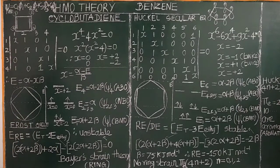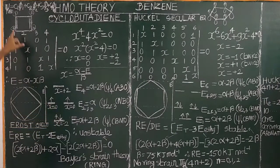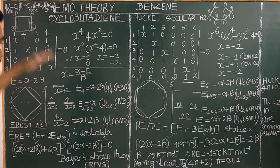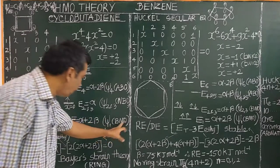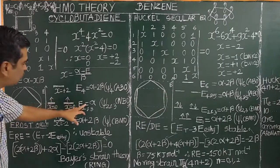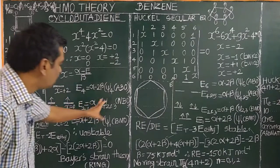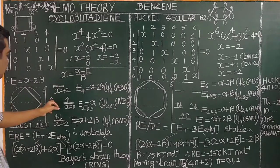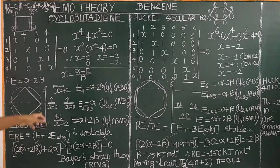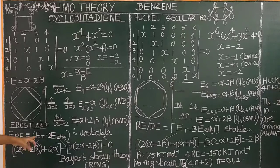Now let us calculate the resonance energy, which is the delocalization energy equal to ET (total energy). There are four pi electrons, filled in increasing order of energy. Two electrons go into the bonding molecular orbital, and the other two are filled in the non-bonding orbitals using Hund's rule of maximum multiplicity — giving two unpaired electrons.